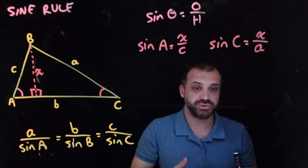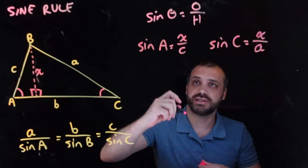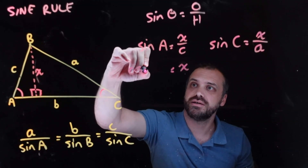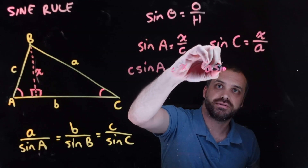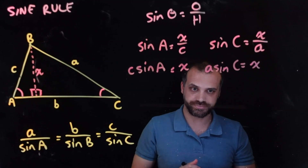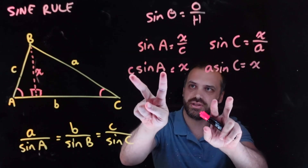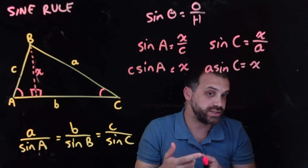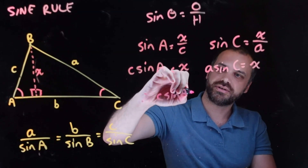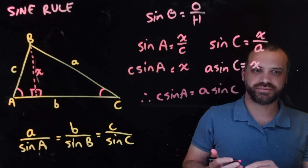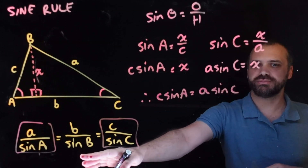These two equations have something in common — they both contain x. So I can rearrange them both to equal x. Multiplying both sides: x equals c·sinA, and x equals a·sinC. Since both expressions equal x, they must equal each other: c·sinA equals a·sinC. Therefore, c·sinA equals a·sinC — this is the portion of the formula we're aiming for.